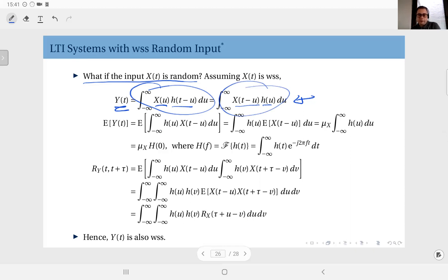And h(u) is not random, it's just the impulse response of the system, the system itself is not random, so it can stay out of the expectation. And this is the expected value of x, well it is at t minus u, but it doesn't matter because x is wide sense stationary so the mean doesn't depend on time.